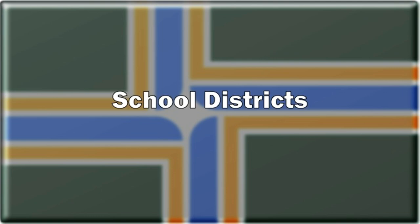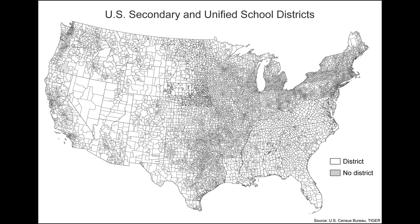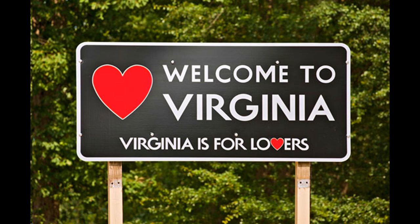School districts are somewhat self-explanatory — these are districts that exist to provide primary and secondary schooling. In every state except Virginia, they can levy taxes, and in some states they're completely independent from the other forms of government, while in others they're completely dependent on either county or municipal governments.